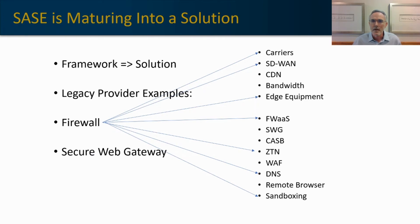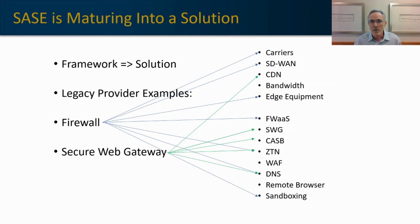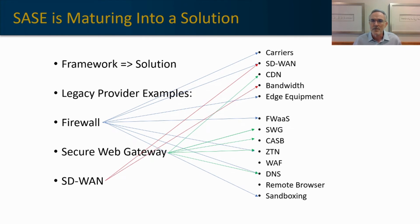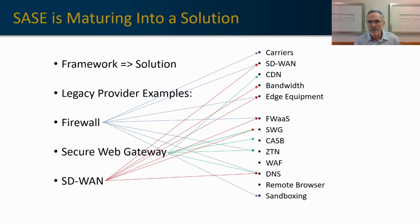When you look at the secure gateway vendors, they have a different strategy because they're coming at the market from a different point. They're focusing on content distribution, the secure web gateway element, CASB, zero trust, and DNS services — taking their core competencies and adding complementary services without leapfrogging into areas where they don't yet have great domain experience. Then the traditional SD-WAN providers: they have an SD-WAN strategy leveraging bandwidth aggregation, edge equipment, and appliance consolidation, but they're also adding firewall as a service, secure web gateway services, and DNS services. That's the framework they're evolving into a complete SASE product solution.